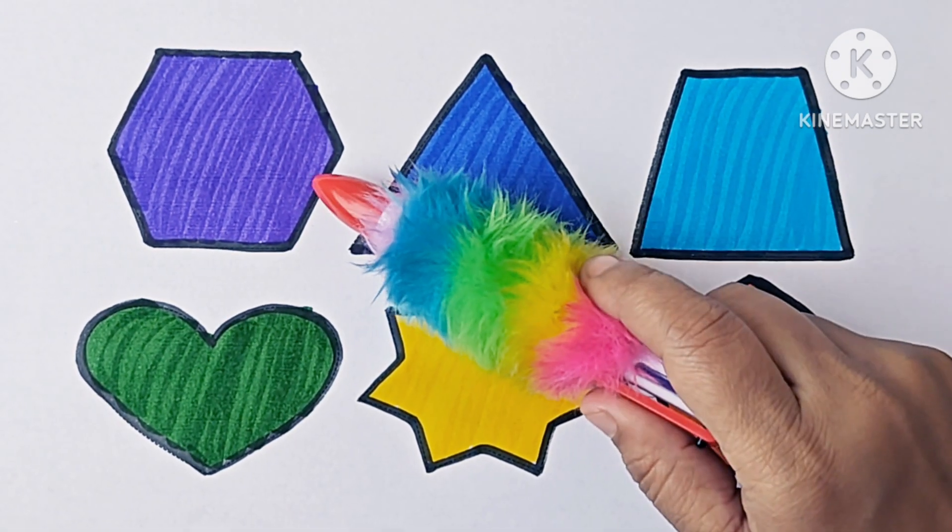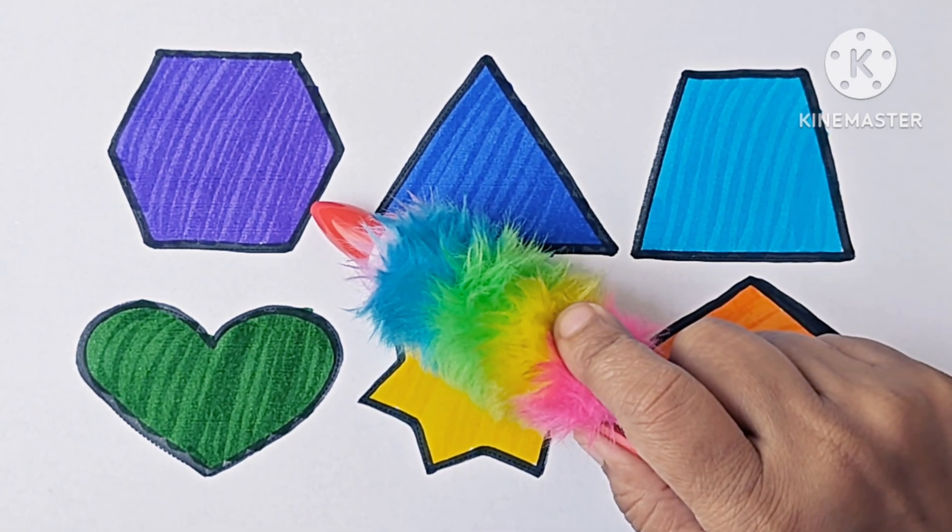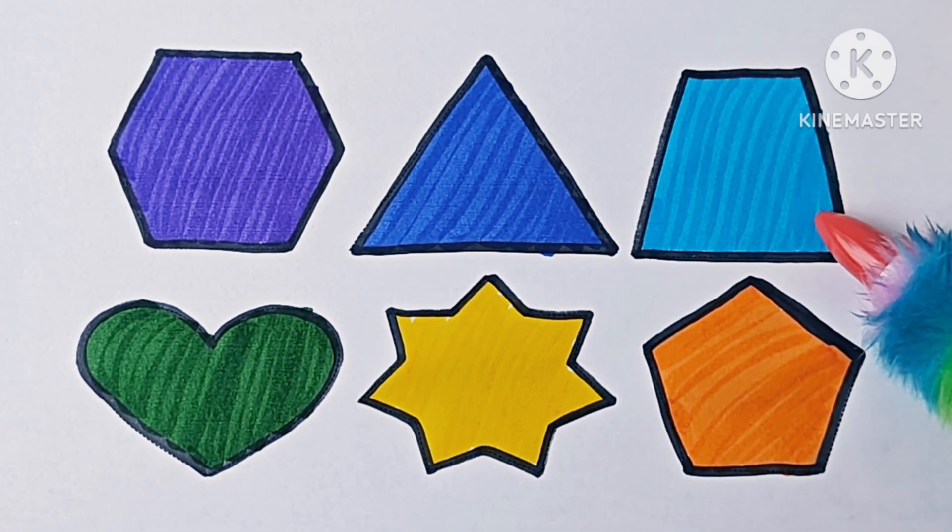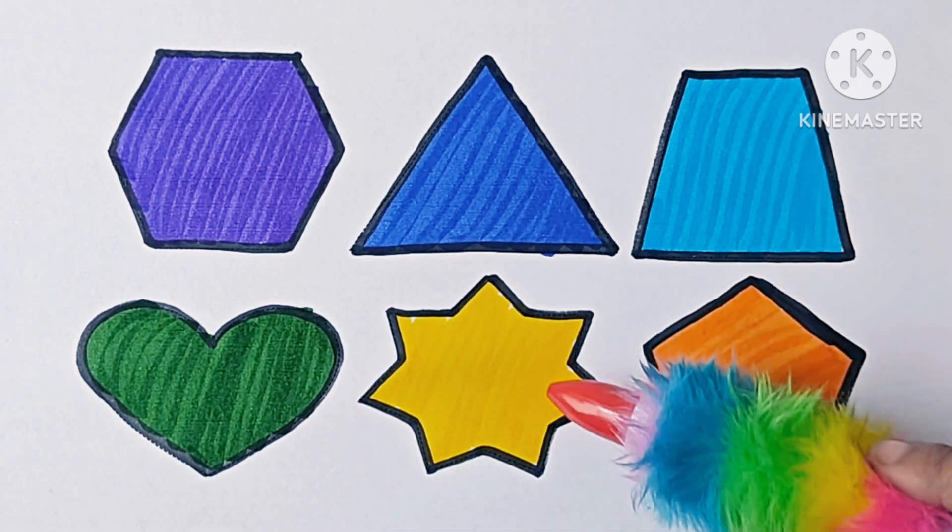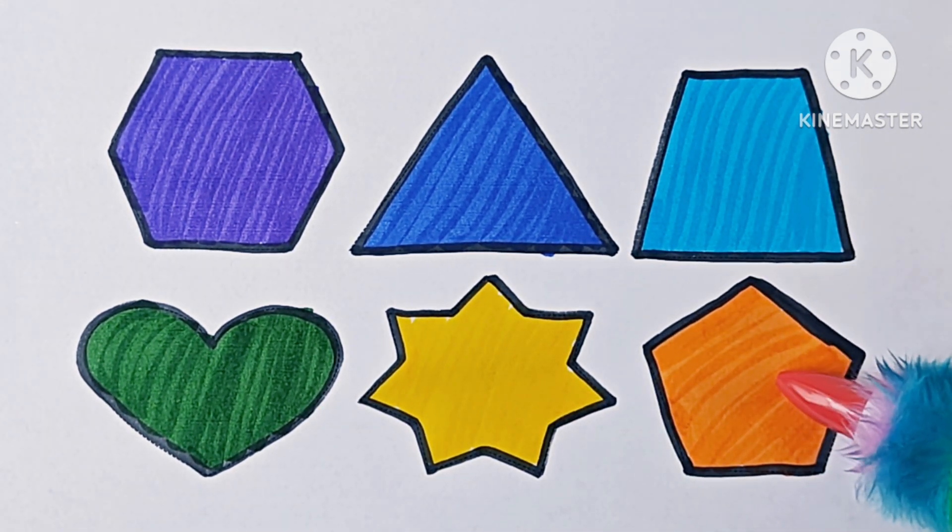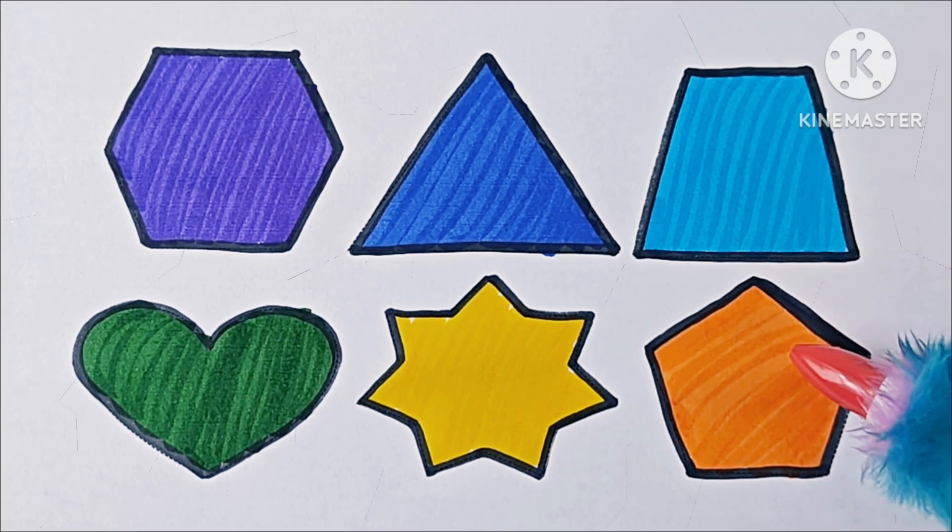This is a hexagon, it has 6 sides and it is a 2D shape. Triangle, 3 sides, 2D shape. Trapezoid, 4 sides, 2D shape. This is heart, it is a shape. This is a seven-pointed star, it has 7 points. This is pentagon, it has 5 sides and it is a 2D shape.